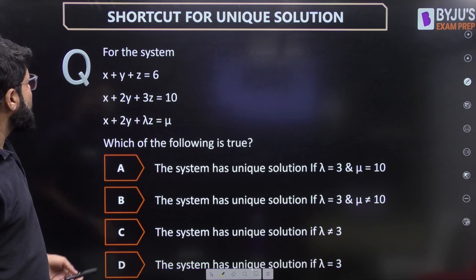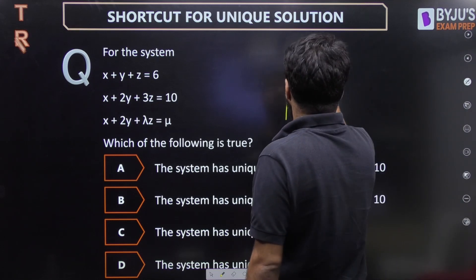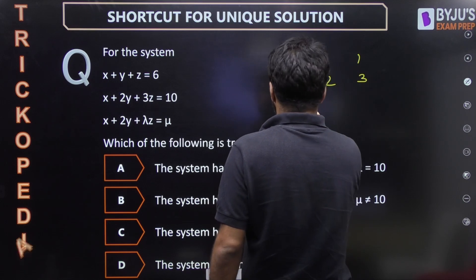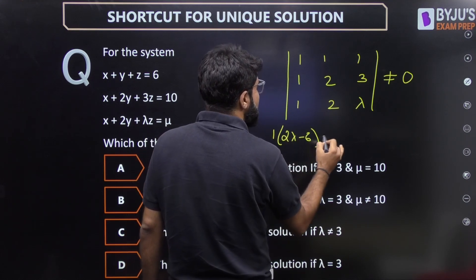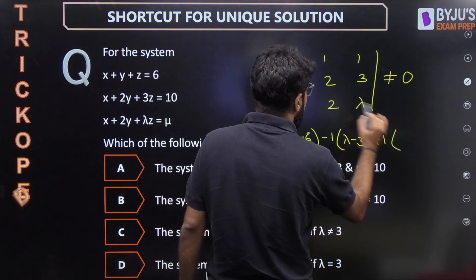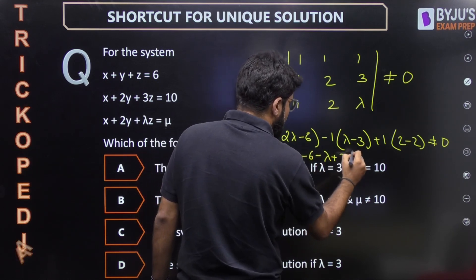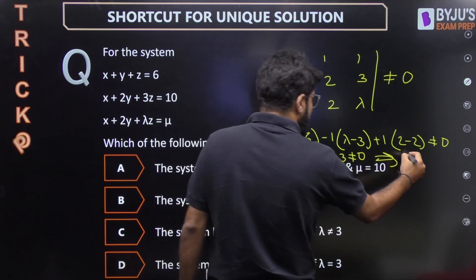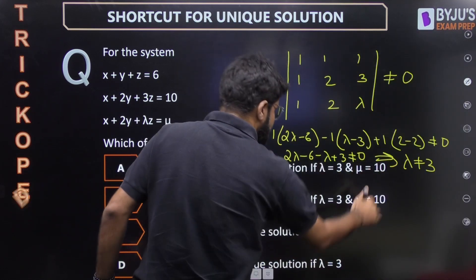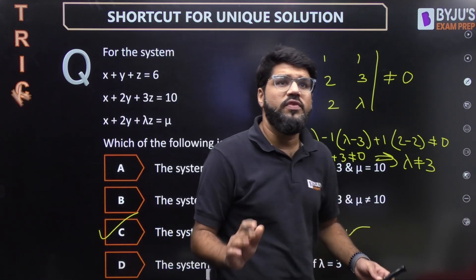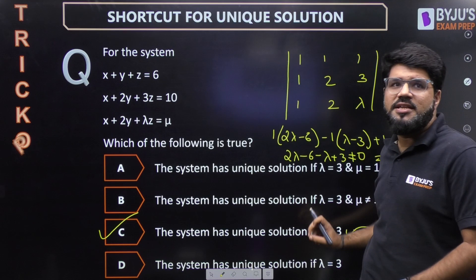Moving to the next question: for the given system of equations, which of the following is true regarding a unique solution? Taking the coefficient matrix [1,1,1; 1,2,3; 1,2,λ], the determinant must not equal zero. Solving: 2λ − 6 − (λ − 3) + (2 − 2) ≠ 0, giving λ − 3 ≠ 0, so λ ≠ 3. There is no role of μ for the unique solution case — μ appears only for infinite and no solution cases.